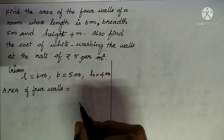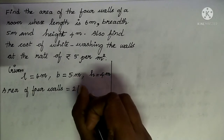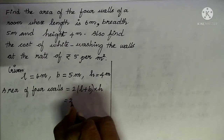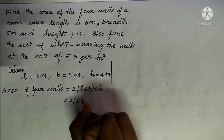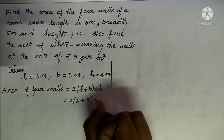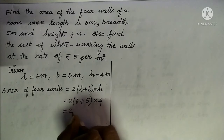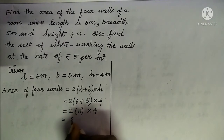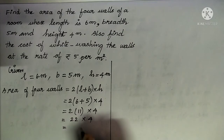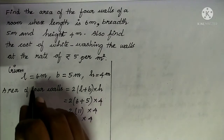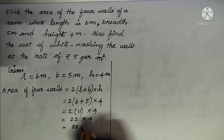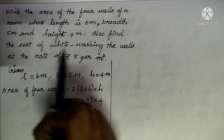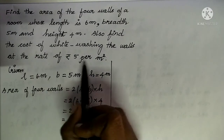The area of the four walls is the lateral surface area of a cuboid: 2(L + B) × H. We will substitute all measures in this formula: 2 into (6 + 5) into 4. That is 2 into 11 into 4. 2 into 11 is 22, and 22 into 4 is 88. Since all measures are given in meters, the area of the 4 walls is 88 meter square.